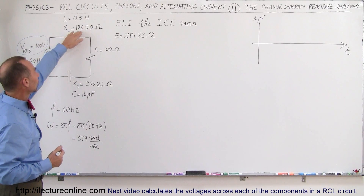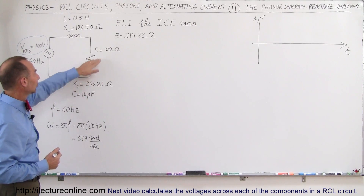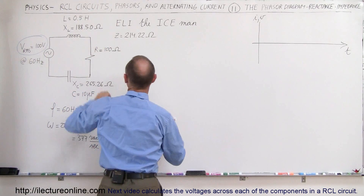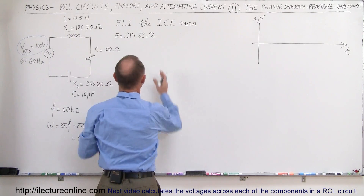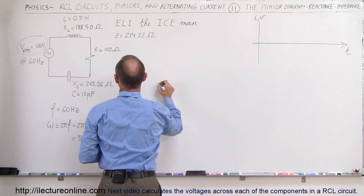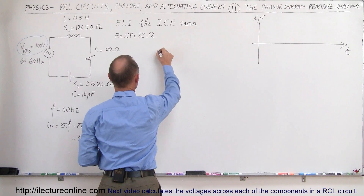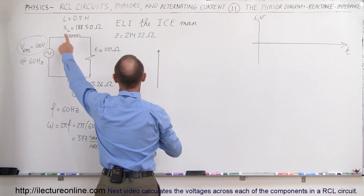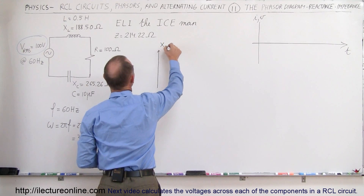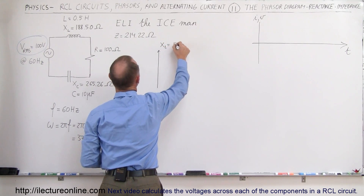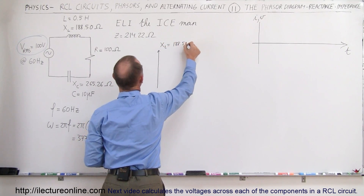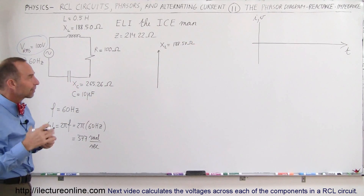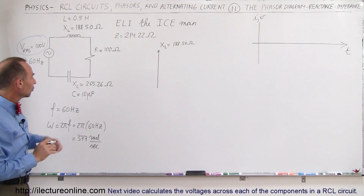We have the reactance of the inductor, the reactance of the capacitor, the resistance, and the total impedance. So let's go ahead and put that on the diagram. The inductive reactance goes straight up, and that's 188.5. We make the arrow about the appropriate length relative to the size. So this would be X sub L equals 188.50 ohms. There are some extra significant figures, but just to make things a little bit more accurate later on, we'll go ahead and keep those.